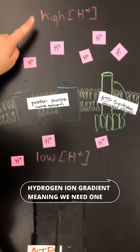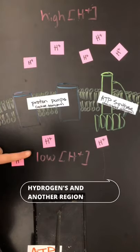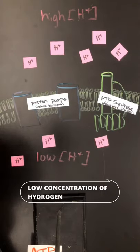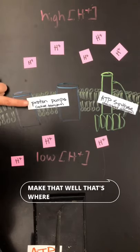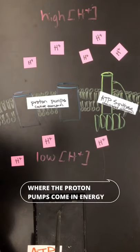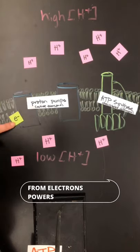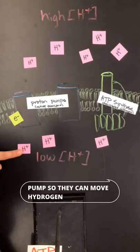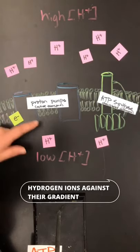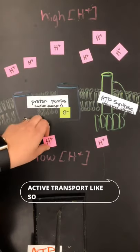We need one region with a high concentration of hydrogens and another region with a low concentration of hydrogens. That's where the proton pumps come in. Energy from electrons powers the proton pumps so they can move hydrogen ions against their gradient using active transport.